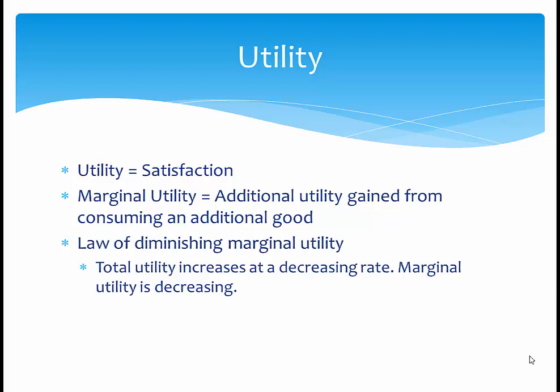Marginal utility is also a very important concept. Total utility is how much utility you have in total. Marginal utility just means how much additional utility you get from consuming an additional unit. If I get 6 units of utility from the 5th apple I consume, the marginal utility is 6 for that apple, regardless of how many apples I already ate or how much utility each other apple gives.